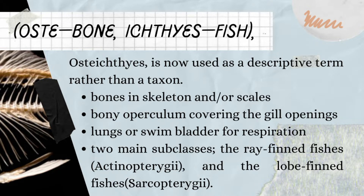Although it used to be called the class of sticks in a taxon, it is now used to describe fishes that have skeletons made out of bony tissues. The term came from the combination of two words: 'osteo' meaning bones and 'ichthys' meaning fish. This collection of fishes also has a bony operculum covering the opening of their gills, and lungs or swim bladders to enable them to breathe underwater.